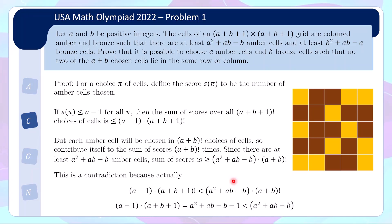To verify the contradiction algebraically, cancel (A+B)! from both sides. The upper bound becomes (A−1)·(A+B+1) and the lower bound is A²+AB−B. Expanding: (A−1)·(A+B+1) = A²+AB+A−A−B−1 = A²+AB−B−1. So the upper bound is exactly 1 less than the lower bound — the weird quantity is precisely chosen so this works out with a difference of 1.